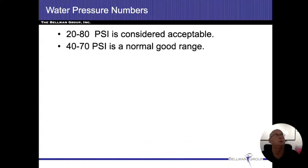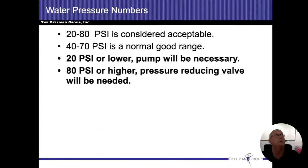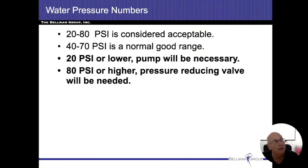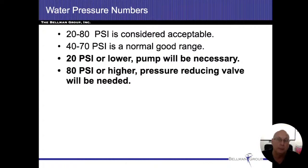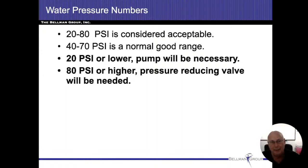These are going to be test questions. Any water pressure on a supply system between 20 and 80 PSI is considered acceptable. In our area, 40 to 70 is what's kind of normal. Anything under 20, you're going to need a pump. Anything over 80, you're going to need some sort of pressure reducing device. That 80 PSI threshold is when we start getting into the valves for dishwashers, washing machines, things that are automated to turn on and off — that's where it comes into play.